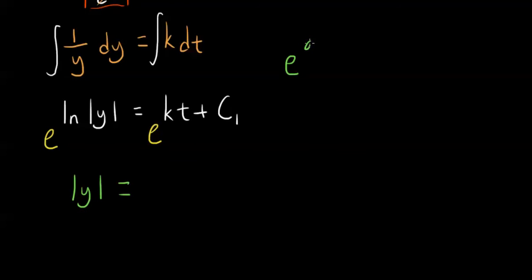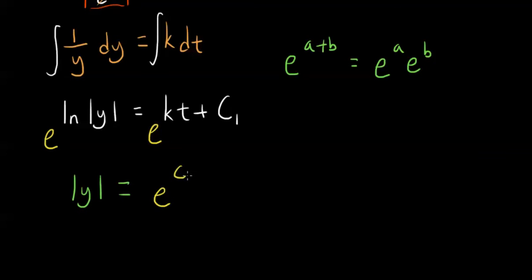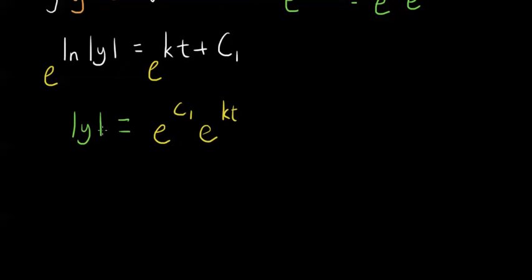Since e to the a plus b is equal to e to the a times e to the b, we can separate this: e to the kt plus c sub 1 equals e to the c sub 1 times e to the kt. And since we have absolute value of y, we know y is equal to plus or minus e to the c sub 1 times e to the kt.